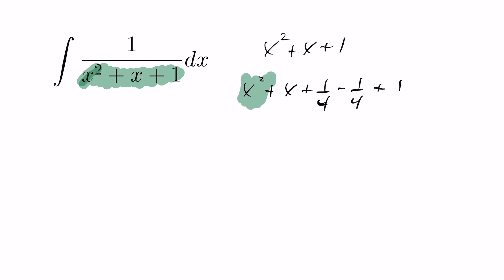And now I've forced a perfect square here. This is going to factor into x plus 1 half squared plus 3 quarters. So now I can replace the x squared plus x plus 1, writing it in this form here, plus 3 quarters with respect to x.